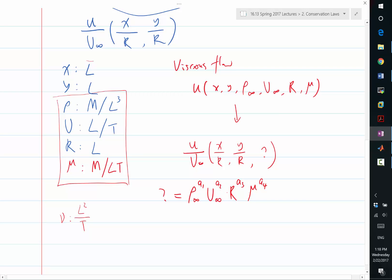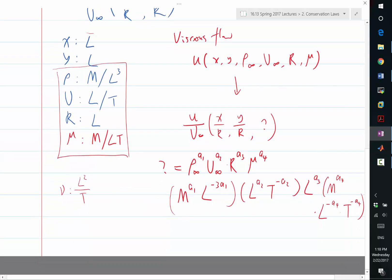So let's say the non-dimensional group question mark is equal to rho to the a1th power times u to the a2th power, so these are infinities, times r to the a3th power times mu to the a4th power. All right. What you need to do is to make this question mark non-dimensional. So if you look at the units of this question mark, it is m to the a1th power times l to the minus 3 a1th power. So this is the dimension of rho infinity, right?